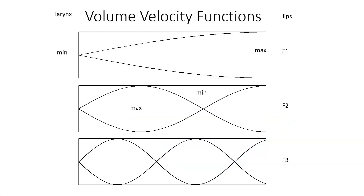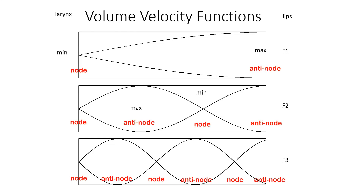These locations are marked for the standing waves for each of the formant frequencies. The first formant is the wave with a wavelength four times the length of the tube. The second formant is the next odd multiple — three times that frequency. And the third formant is the next odd multiple — five times that frequency. For each of these standing waves, there are points of minimum and maximum pressure change. The minimum change points are known as nodes, and the maximum change points are known as antinodes.